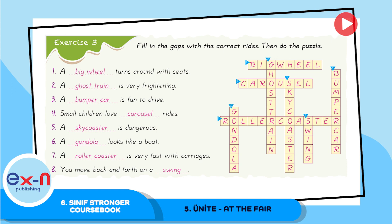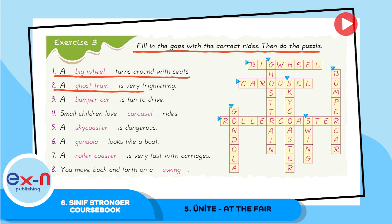Exercise 3. Fill in the gaps with the correct words, then do the puzzle. Number 1: A big wheel turns around with seats. Number 2: A ghost train is very frightening. Number 3: A bumper car is fun to drive. Number 4: Small children love carousel rides.